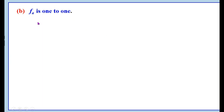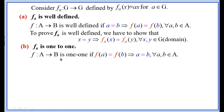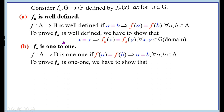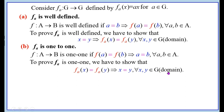We shall now show that F_A is one-to-one. A function F from A to B is one-to-one if F(A) equals F(B) implies A equals B for all A, B belonging to A. One-to-one is the reverse process of well-defined. In one-to-one, we assume that the images of two elements are equal and show that those two elements must be equal. Therefore, to prove F_A is one-to-one, we show that F_A(X) equals F_A(Y) implies X equals Y for all X, Y in G.